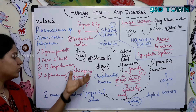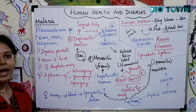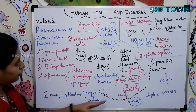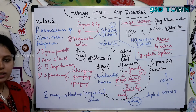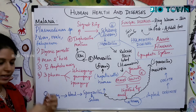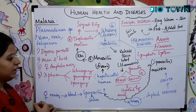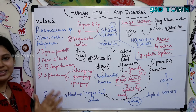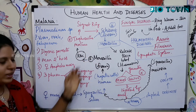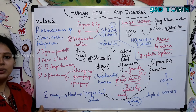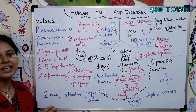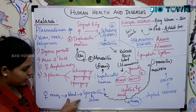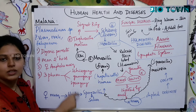There are three phases in the Plasmodium life cycle: schizogony, gametogony, and sporogony. There are many stages and divisions, but observe carefully as each stage will be explained clearly.